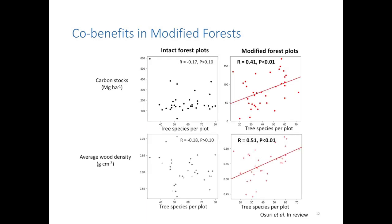What we found is that in intact forest plots, one does not see a relationship between tree diversity and carbon stocks. Whereas in modified forests, you see a positive relationship — plots with higher tree diversity also stored more carbon. A key reason for this difference is the response of average wood density. Wood density is a structural property corresponding to the amount of carbon held per unit volume of wood, and it varies from species to species. Old-growth interior tree species tend to have high wood densities, while species with low wood densities do better in disturbed ecosystems. Within modified forests, when species diversity is reduced, there is a corresponding decrease in wood density, whereas one does not see similar patterns within intact forest plots.